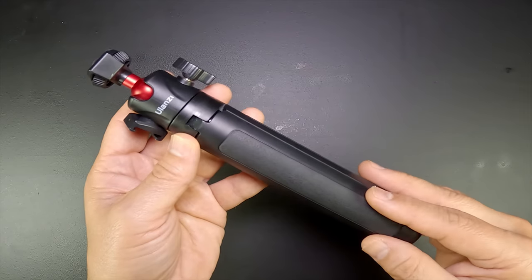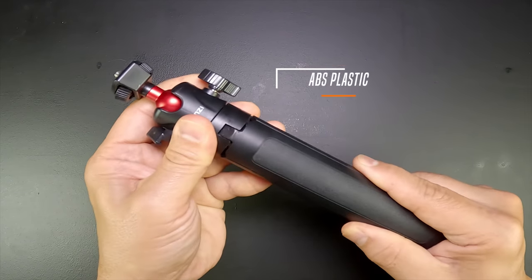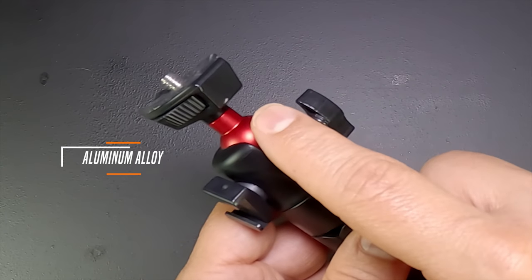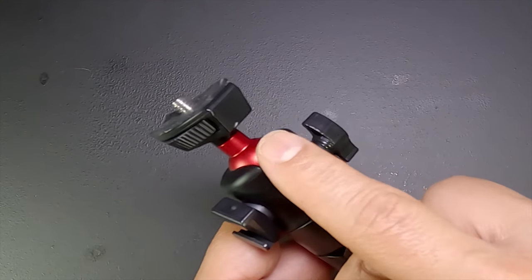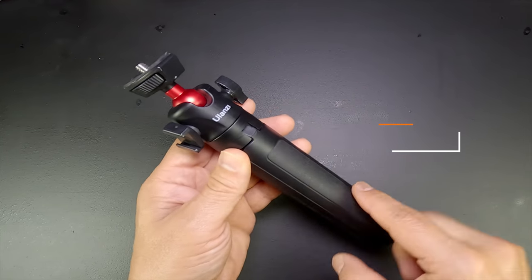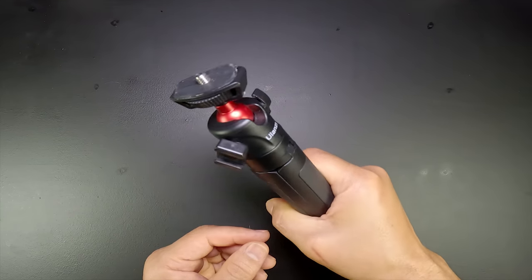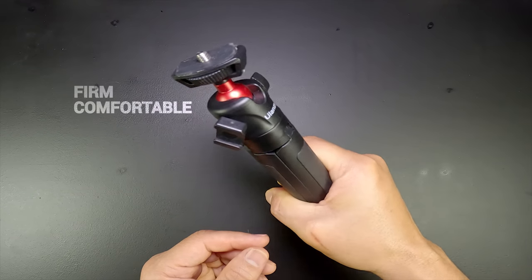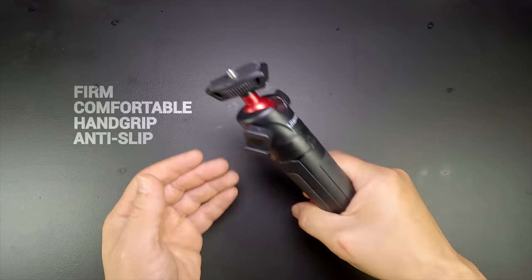The tripod is made from a good balance of durable ABS plastic and aluminum alloy ball head to support your action camera well. With this rubberized silicone design on the legs, you get a firm and comfortable hand grip with an anti-slip feel.